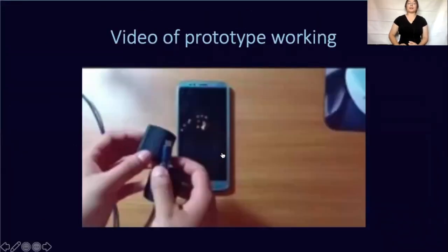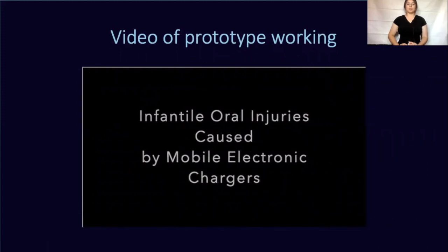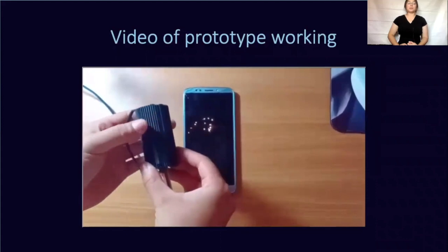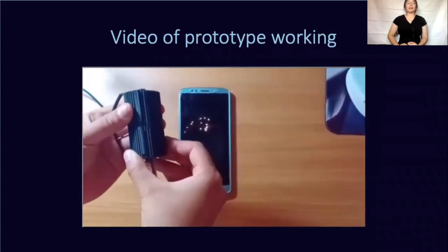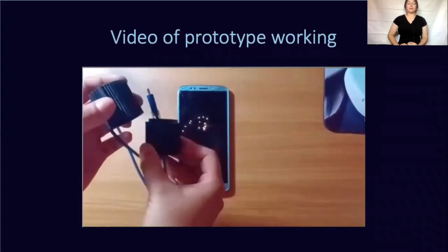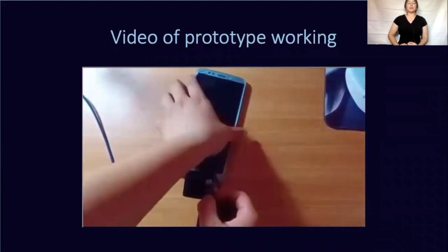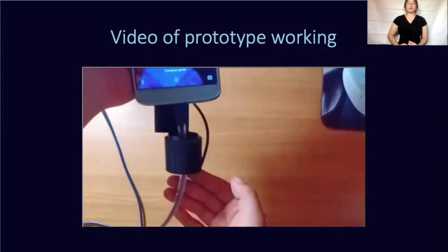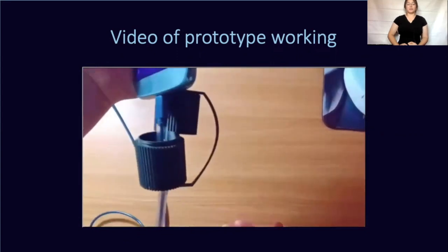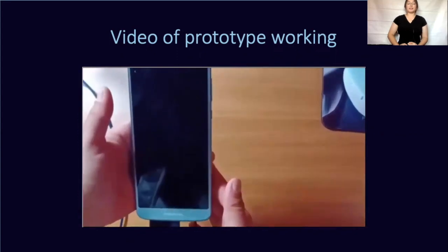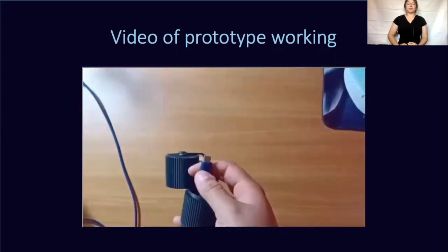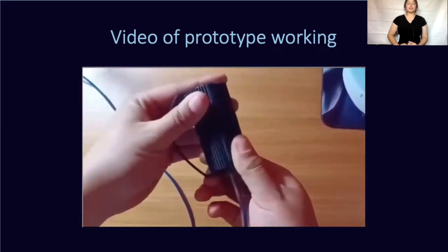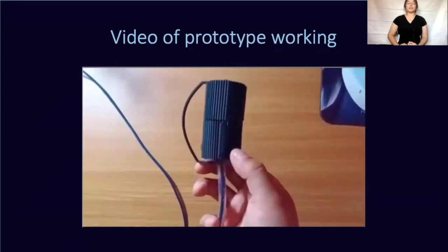Next, we have a video of my prototype working. This is how the device is used: starting with a fully assembled prototype that is first aligned and then unaligned, by aligning it once again we are able to remove the top piece from the bottom piece to expose the live charging cable. I then insert the charging cable into a phone, which clearly shows that it is working. Each component remains attached and secured. To secure the mechanism again, align the triangles, snap it back together, and disalign the triangles to engage the locking mechanism.